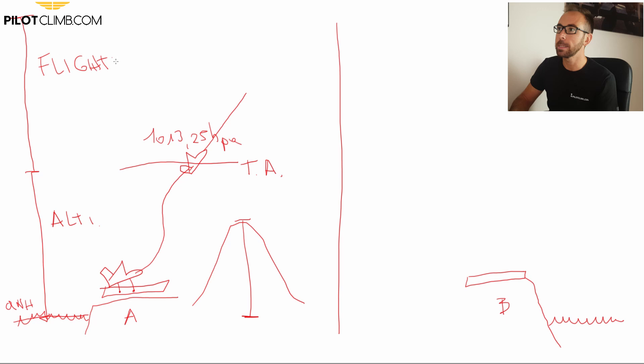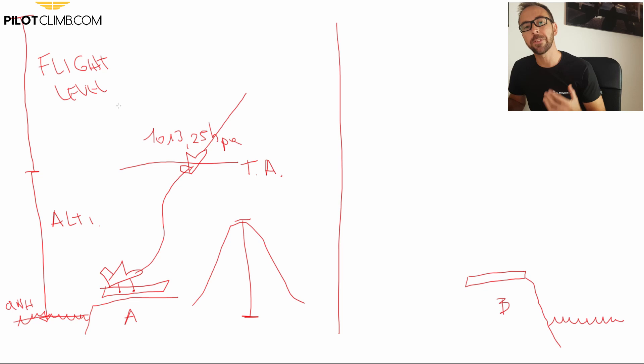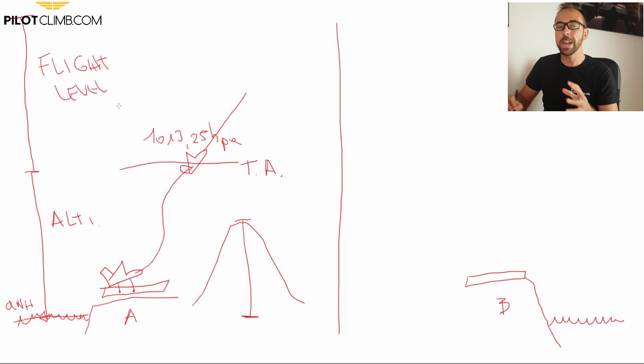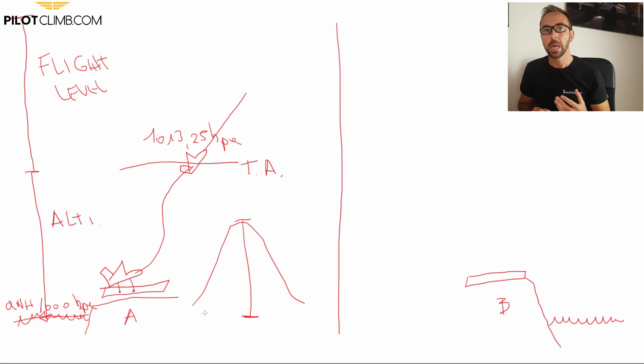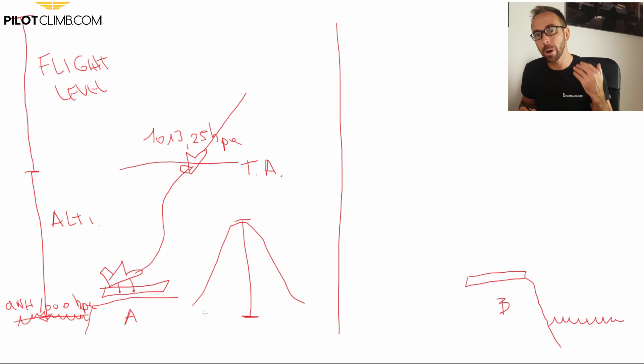Why do we switch to flight levels above the transition altitude? Because once you are separated from the obstacles, your next problem is to be separated from other aircraft. All aircraft above the transition altitude will use 1013.25 hectopascal as a pressure reference. Now you may ask: if the QNH is, say, 1000 hectopascal and the standard pressure reference is 1013, won't I get the wrong altitude since I'm using a different reference? That's correct — but it doesn't matter, because we are well clear of obstacles.